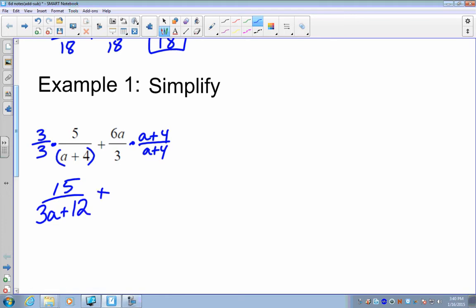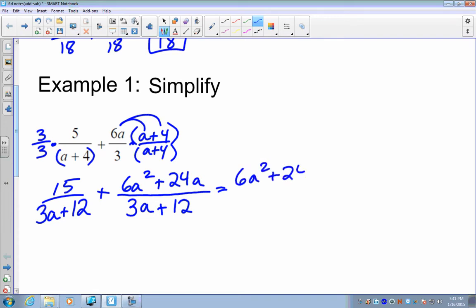On the second fraction, we have 6 times in parentheses a plus 4, so we have to distribute that in. 6a squared plus 24a on the numerator. The denominator becomes 3a multiplied in, distributed. Now we have like denominators. So now we can put them together. We have 6a squared. I'm going to start with the biggest exponent first. Plus 24a plus 15. That's all divided by 3a plus 12.